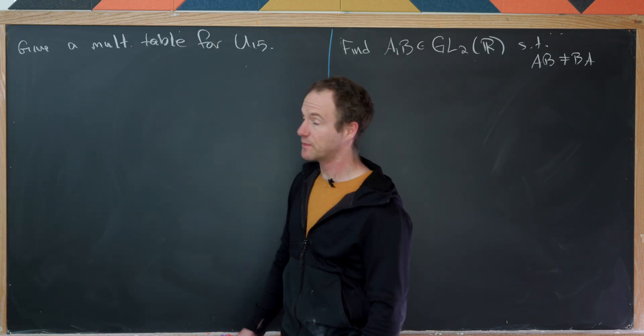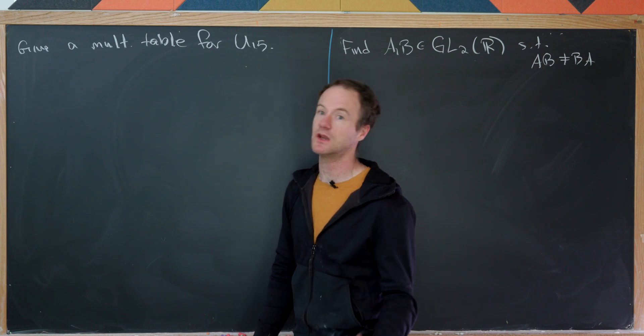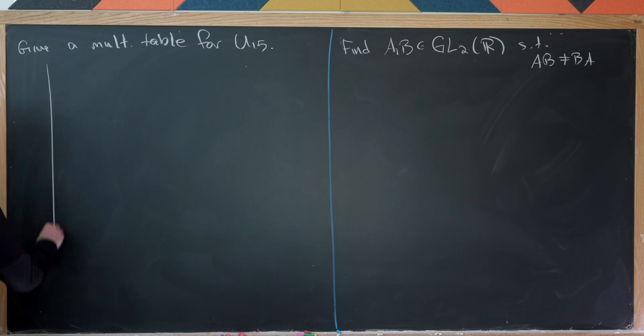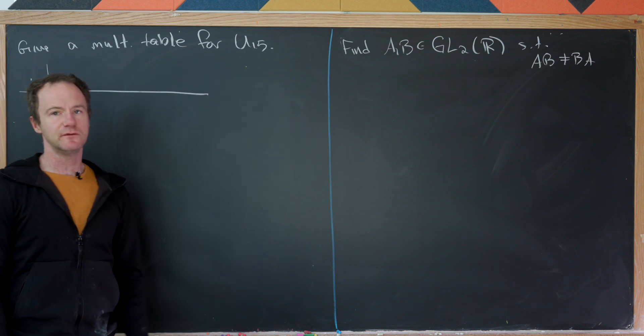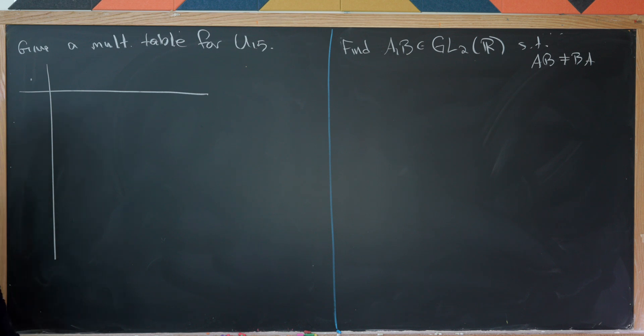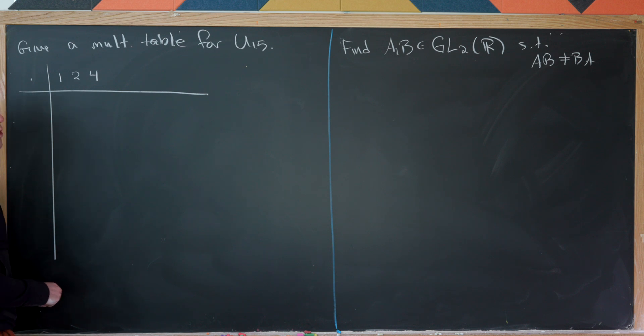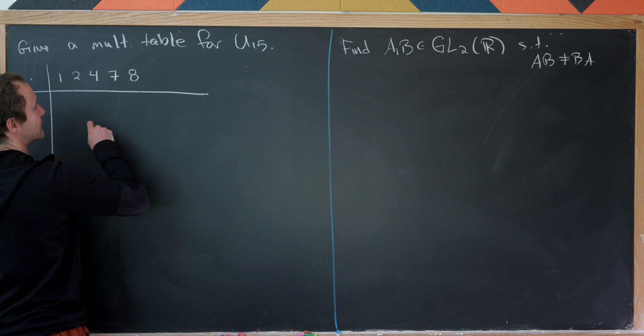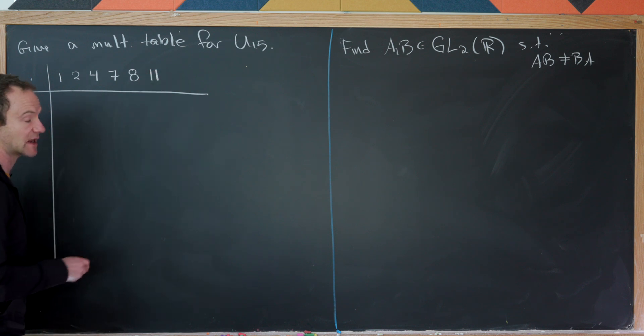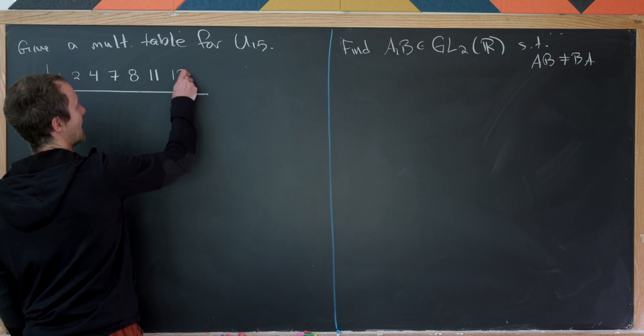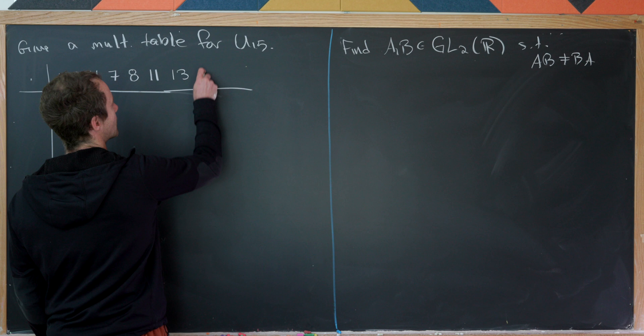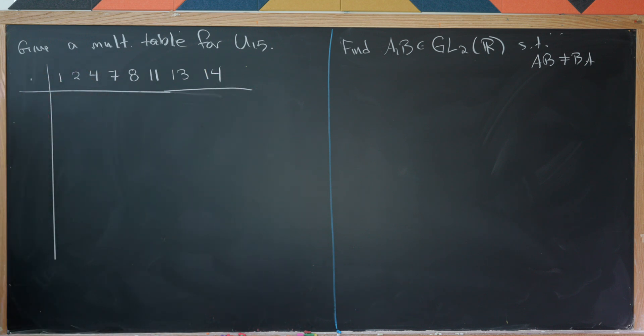All right, let's move on. So next, let's find a multiplication table for the group of units mod 15, U15. Okay, so remember, that's also known as a Cayley table. So here we've got multiplication. And then let's also notice that U15 is made up of all of the numbers between 1 and 15 that are relatively primed to 15. So that means they can't have 3 or 5 as factors. So we have 1, 2, 4. We can't have 5 or 6. We can have 7, 8. We can't have 9 or 10. We can have 11. We cannot have 12 because it shares a factor of 3. We can have 13. And then we can also have 14.